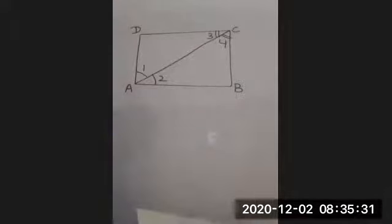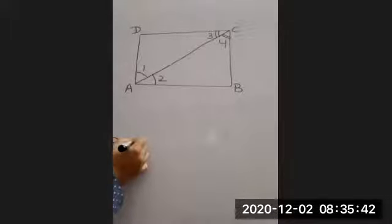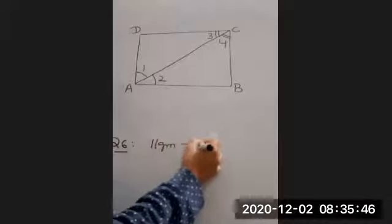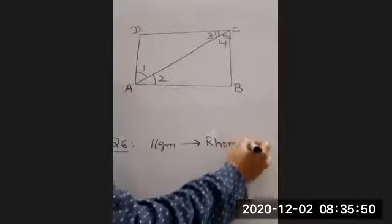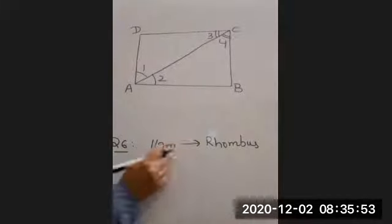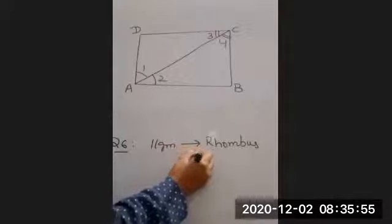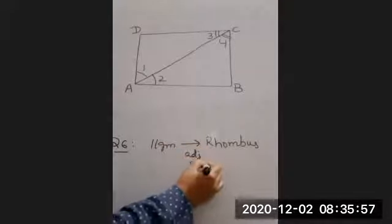So that ABCD is a square and diagonal BD bisects angle B as well as angle D. Children, is it like your question number 6 in which parallelogram was given and we proved it to be a rhombus? What did we do there? What did we prove? That adjacent sides are equal.